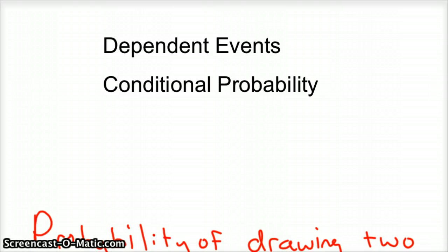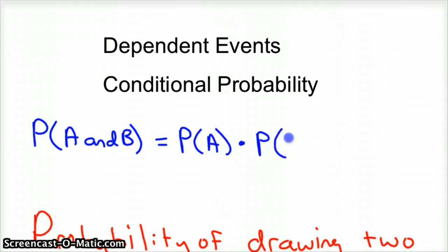And so we have to use what's called conditional probability for that. So when you have dependent events, the basic formula looks like this: the probability of event A and event B happening where they're dependent is the probability of event A times the probability of event B given that event A has occurred.